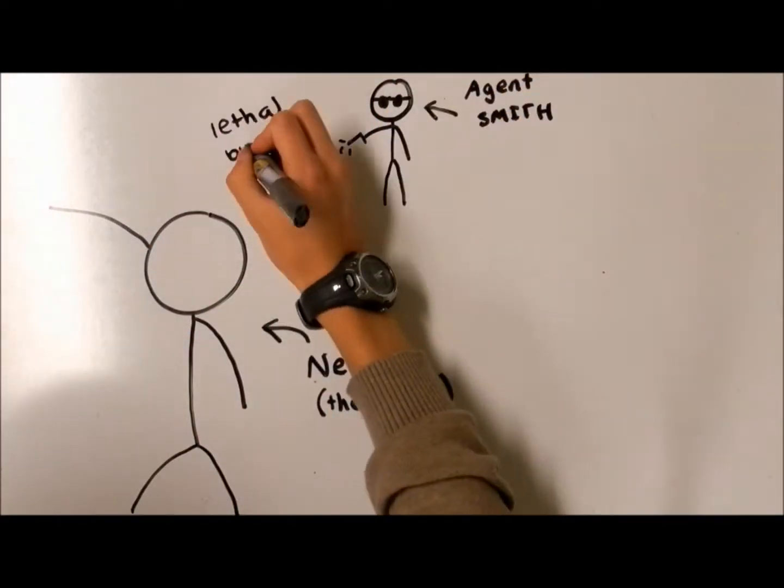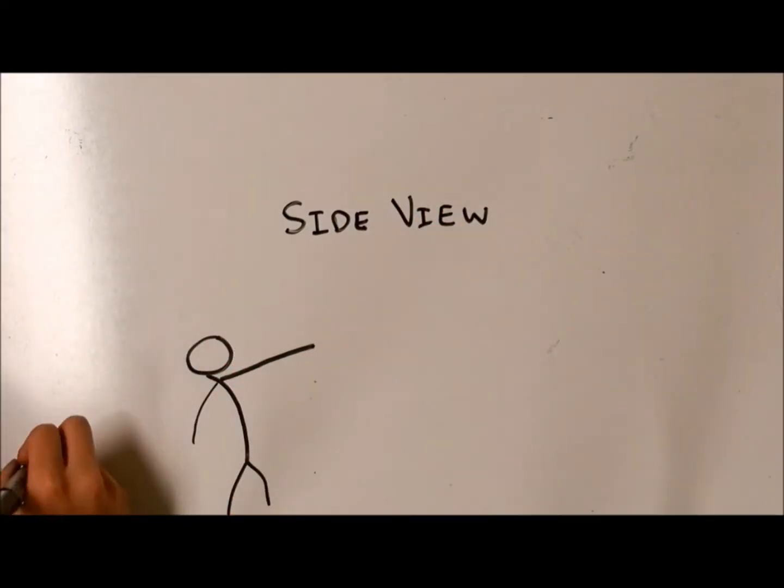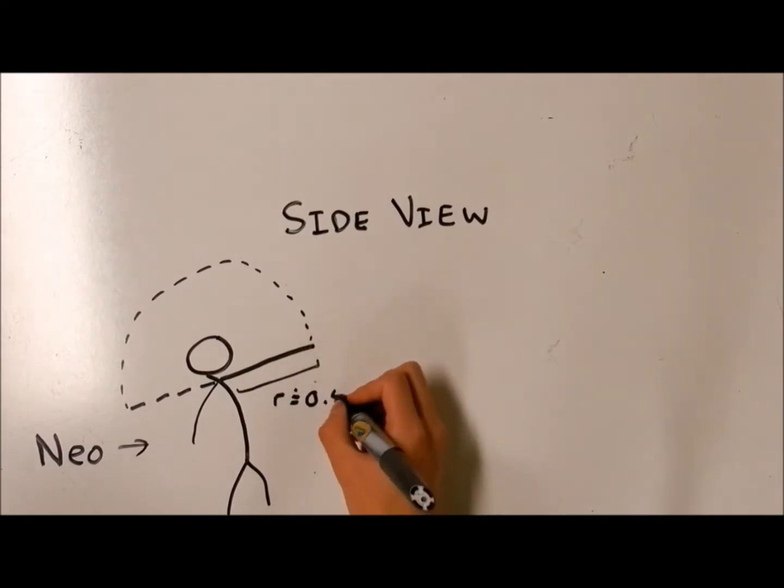This is a sketch of the fight scene being examined. And this is Neo's motion viewed from the side. The radius is the approximate length of the human arm, which is 0.5 meters.